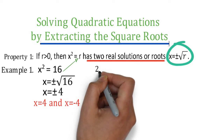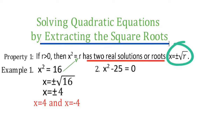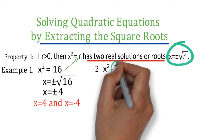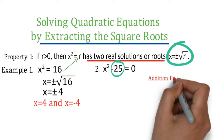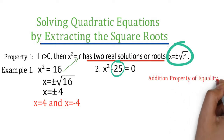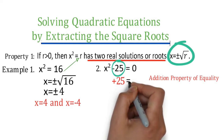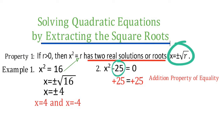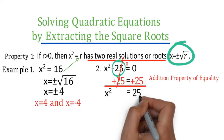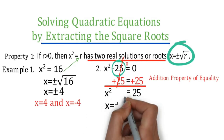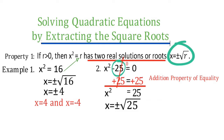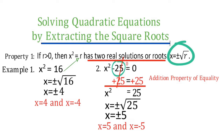Para mas maintindihan natin yung property number one, we'll move on to the second example. The given: x squared minus 25 is equal to zero. Wala tayong r dyan, so hanapin natin yung r. To get the value of r, we'll move the constant number, that is negative 25, to the right side of the equation using the addition property of equality. So we add 25 to both sides. Simplify: negative 25 plus 25 is zero, so x squared remains on the left side, and zero plus 25 gives us 25 on the right side. Since we now have the value of r, we will use property number one. The value of x is equal to positive or negative square root of 25, which simplifies to 5. Therefore, the value of x is 5 and negative 5.